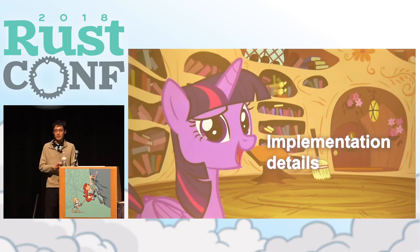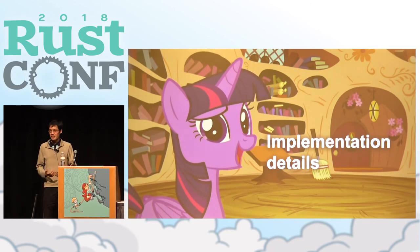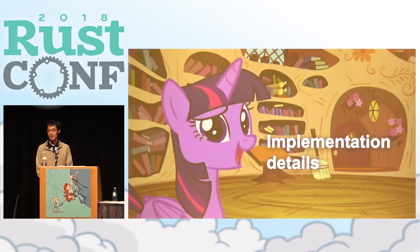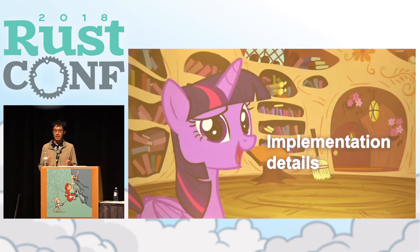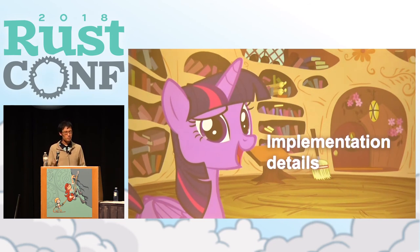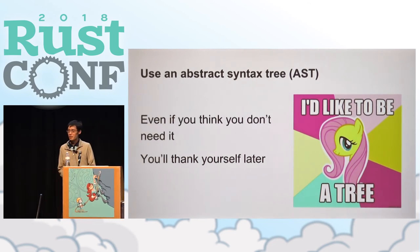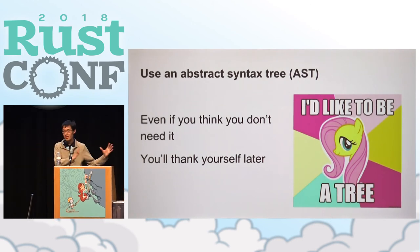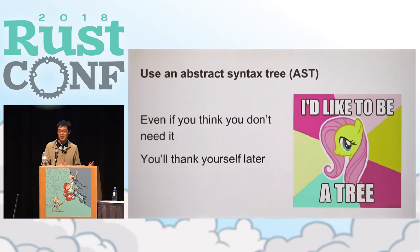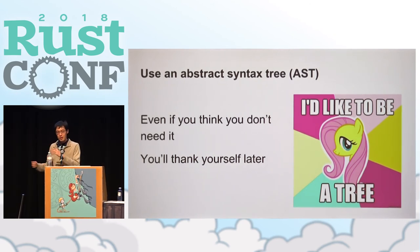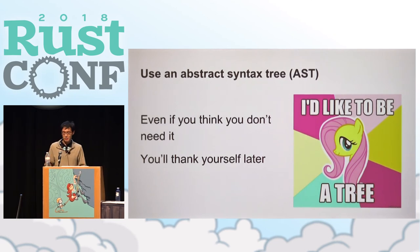So far I've covered more user-facing aspects of Maud. For the rest of this talk I'm going to go more into implementation details — things that you might not see as a user but still help you structure your procedural macro internally. First off: use an abstract syntax tree, or AST. Rather than taking the input to your macro and directly mapping it to generated Rust code, you should instead rearrange it into a tree — a more explicit, simpler, more abstract form that is easier for the rest of your library to work with.